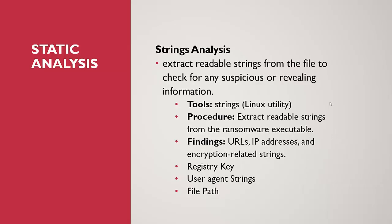The third static method is string analysis — one of the most effective ways to investigate ransomware. In the first method we understood metadata, in the second we used hashes compared against known hash values to identify the ransomware and get a countermeasure action plan. But sometimes we need a deeper analysis of the file — that's where string analysis comes in. A string is a data type implemented as an array of bytes storing a sequence of elements. String analysis extracts readable strings from the file and checks for suspicious or revealing information. The tool 'strings' is a utility available in Linux.